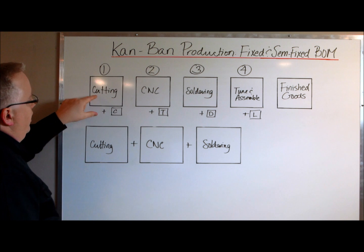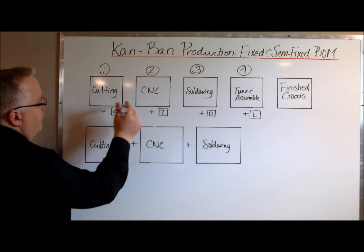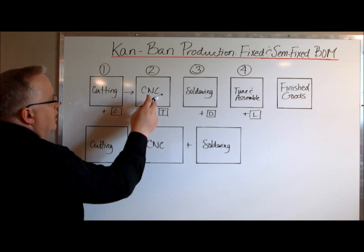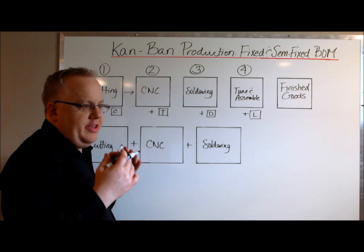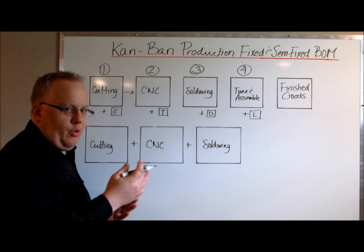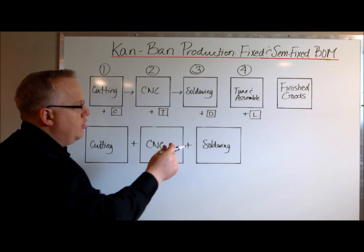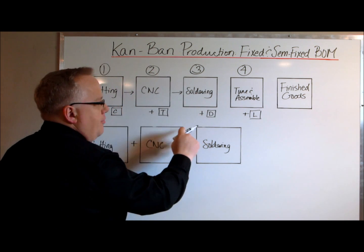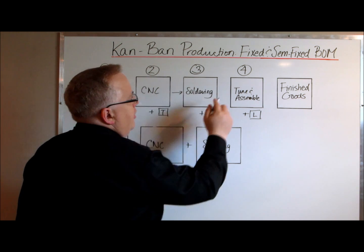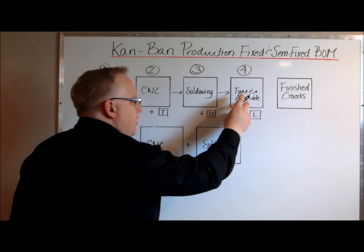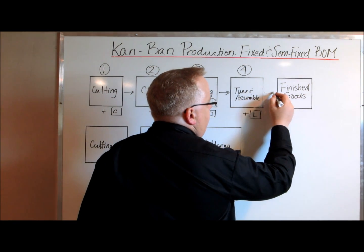With this particular product, you've got cutting and cleaning — these two operations need to be done in order to move the semi-finished good to the next stage, which involves CNC machining of aluminum or invar with tap tools. These two operations then move the product to the next stage, which includes soldering, deburring, drilling, and tapping. Those two operations move it to the fourth stage, where tuning, assembling, and labeling must be done to turn it into a finished good.